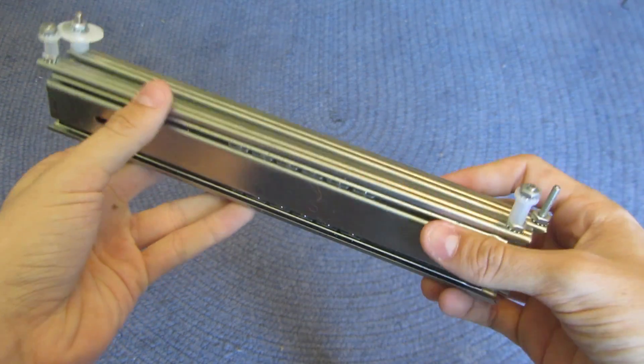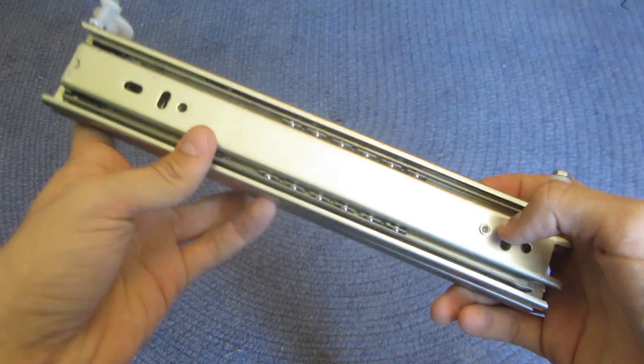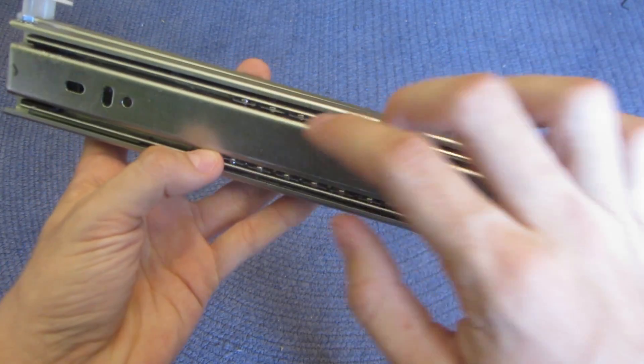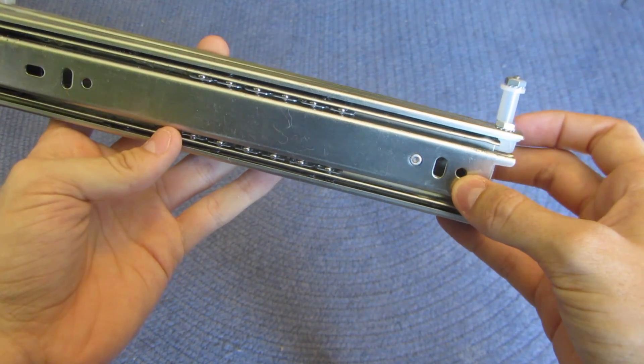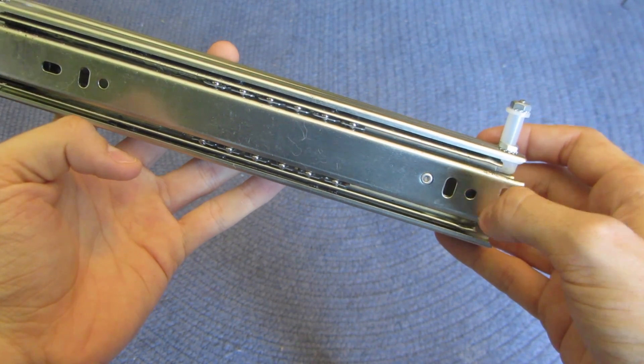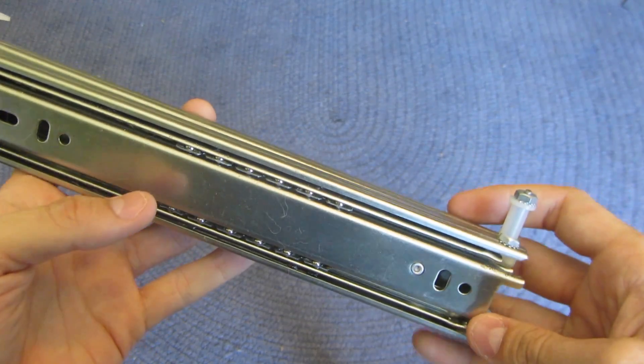So these are two slides that are attached together. We used this hole right here and this hole right here which were already on the slides and then we attached those to the back of another drawer slide.